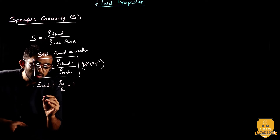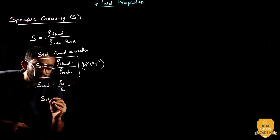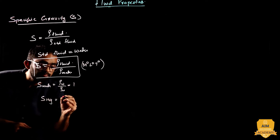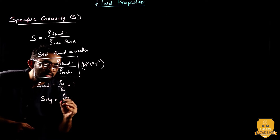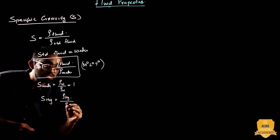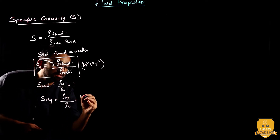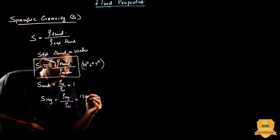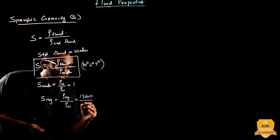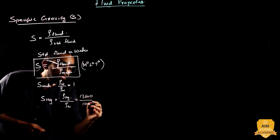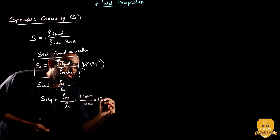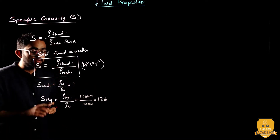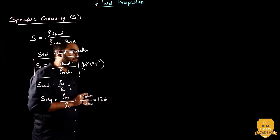For example, the specific gravity of mercury is the density of mercury divided by the density of water, which equals 13,600 divided by 1,000 — so the specific gravity of mercury is 13.6.